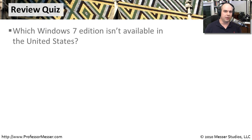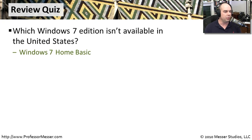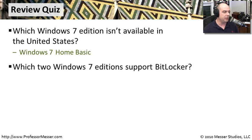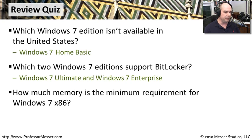Let's review some key points. First: which Windows 7 edition is not available in the United States or other non-emerging markets? That's Windows 7 Home Basic — only available in emerging markets. Second: which two editions support BitLocker? BitLocker is an enterprise function allowing encryption of entire drives or USB storage, so it's only on Windows 7 Ultimate and Windows 7 Enterprise. Third: what's the minimum RAM for Windows 7 on a 32-bit x86 system? One gigabyte. For 64-bit, you need to double that to two gigabytes.